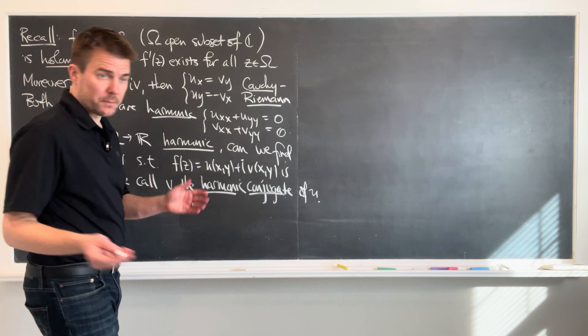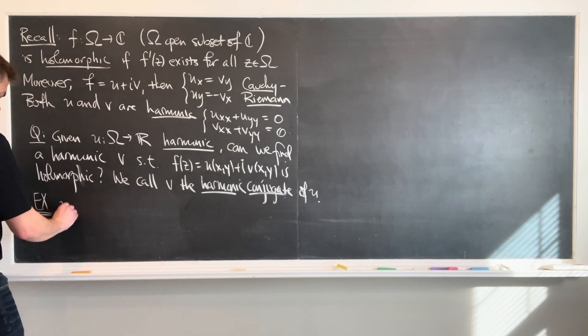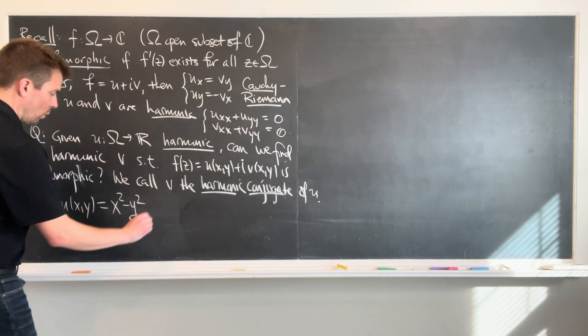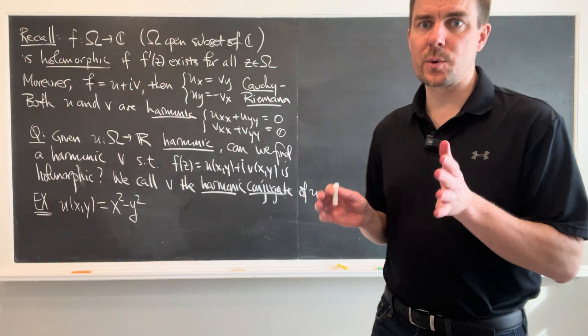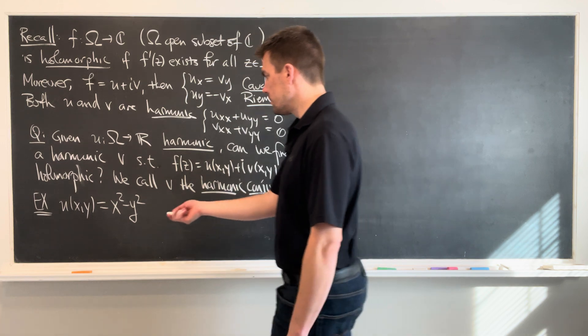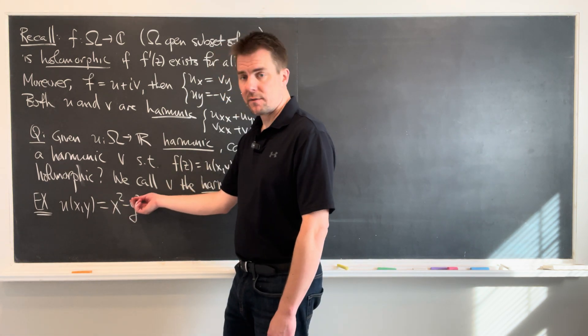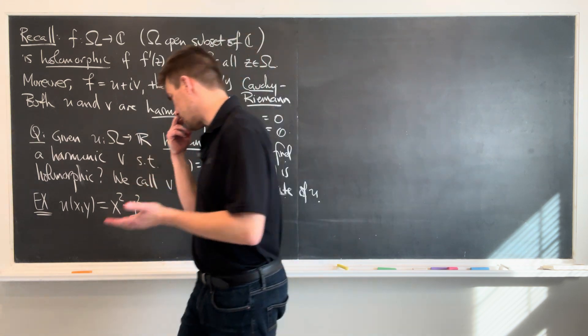Let me give you a real simple example. Here's a simple example, and then I'll prove a general statement. U of x, y is x squared minus y squared. Let's just think about why that function x squared minus y squared is harmonic. Well, the second derivative of this respect to x is just going to be two. The second derivative of this respect to y is going to be negative two. Two plus negative two is zero. So that's a harmonic function.